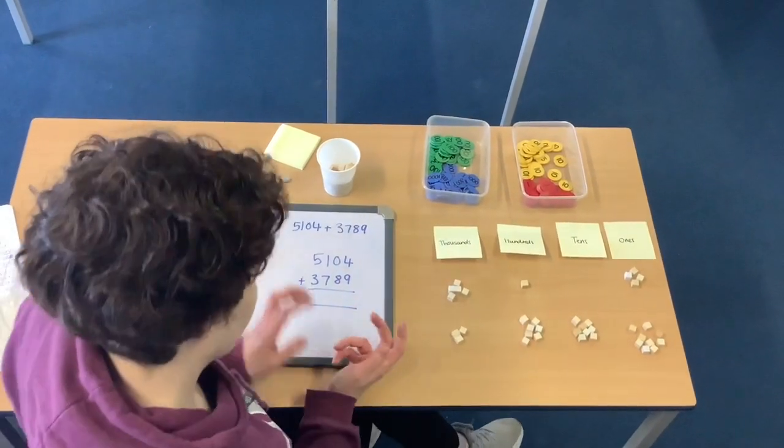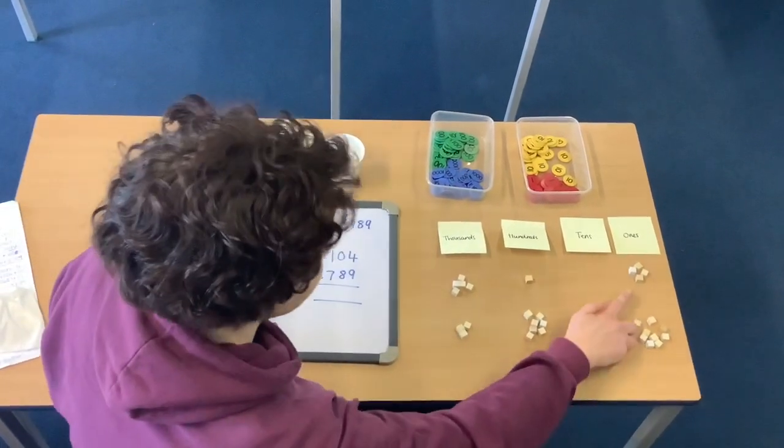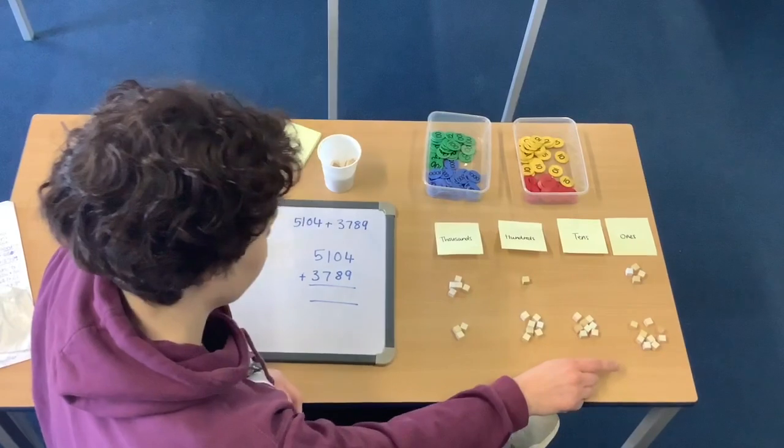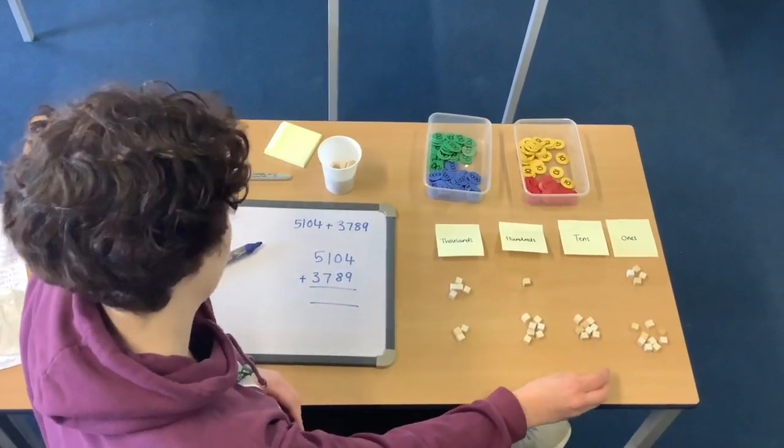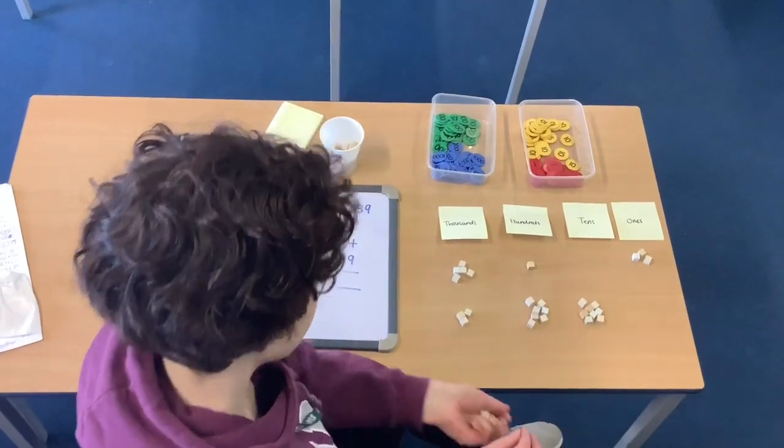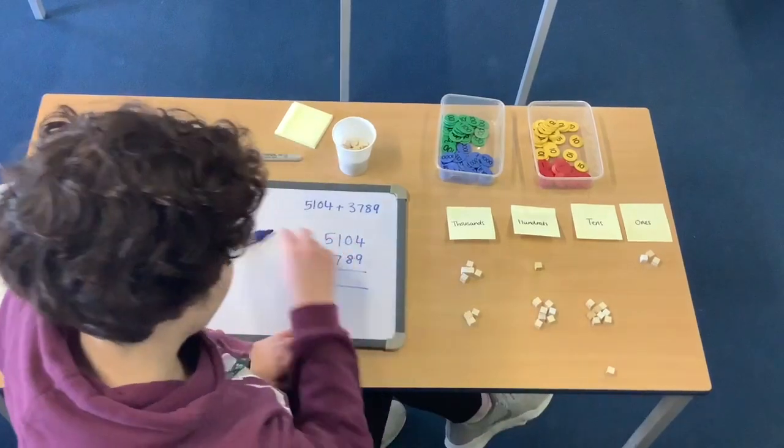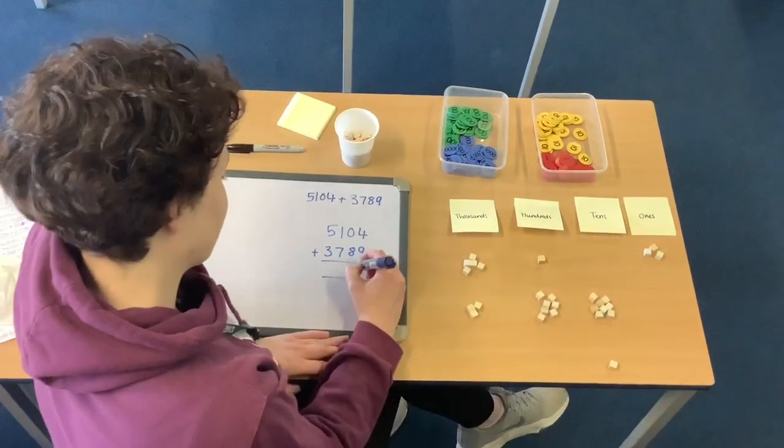So again when we think about addition we are starting with our ones. So this time I've got four ones add nine ones. So in total I've got 13 ones. So I am going to regroup ten of my ones. So I have got three ones left.